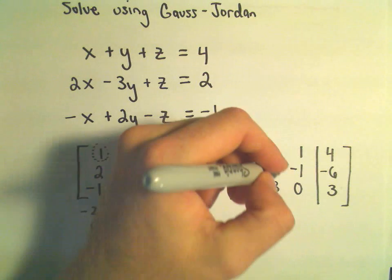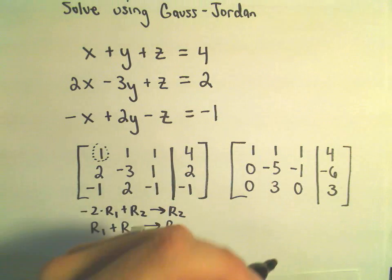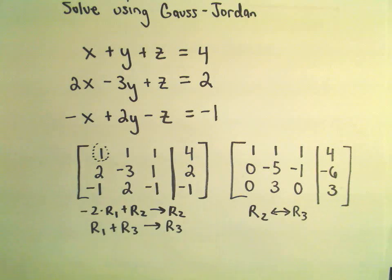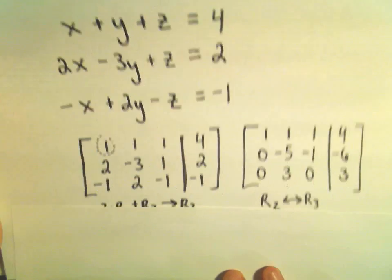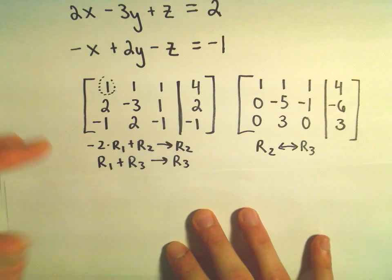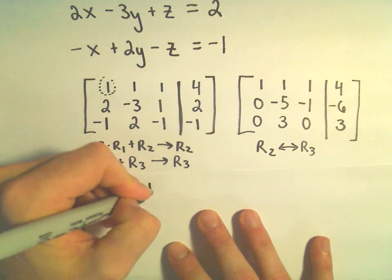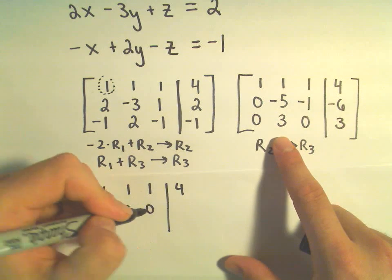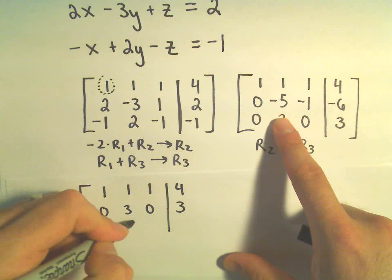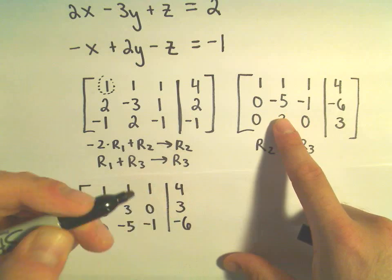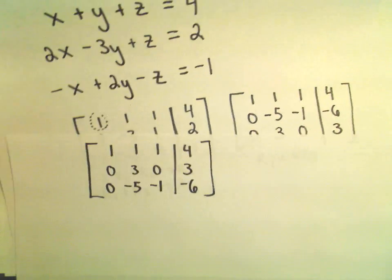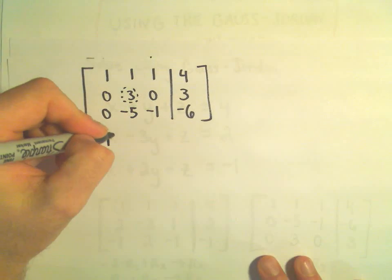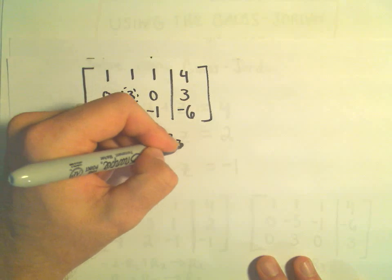The next thing I want to do is make the middle entry into a 1. To do that, I'm going to interchange row 2 and row 3 — just switch those out. It's not going to make the 1 appear immediately, but we'll be able to divide by 3 and then we'll get it. I'm going to write the third row as my second row and the second row becomes the third row. Then I'll take row 2 and divide by 3 to get my new row 2.